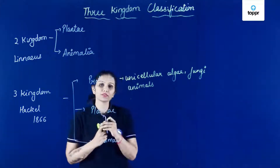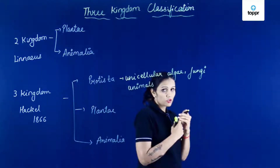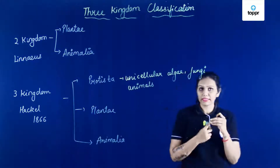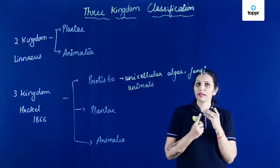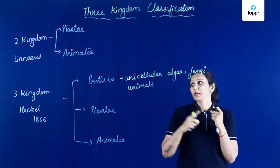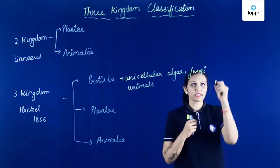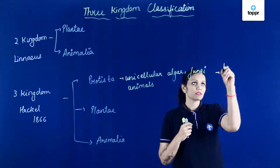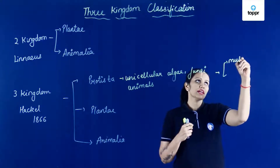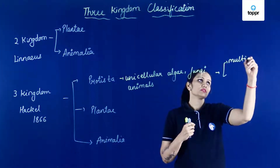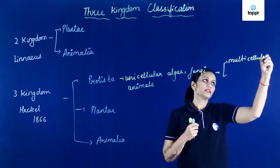Iske andar unhone kisko rakha? Sare questionable drawbacks of Linnaeus — slime molds ko unhone yahan rakha, Euglena ko unhone yahan rakha. But later on, is Protista mein se multicellular fungi ko remove kar diya gaya.